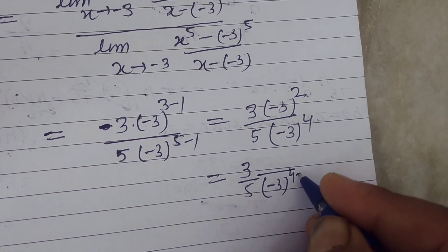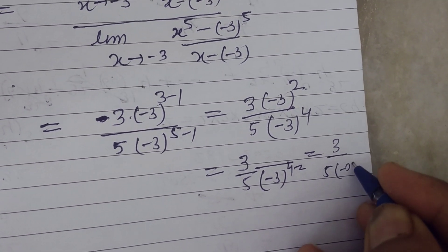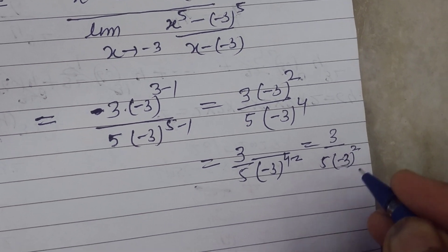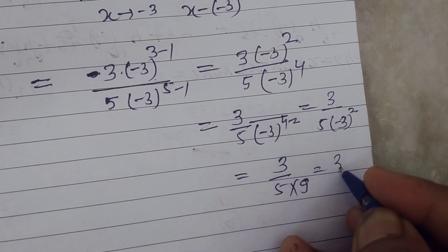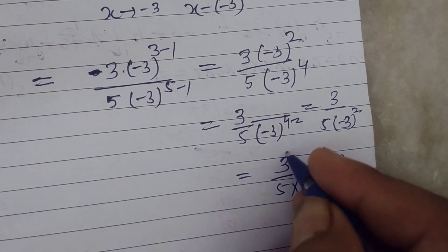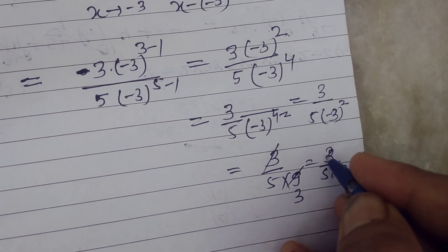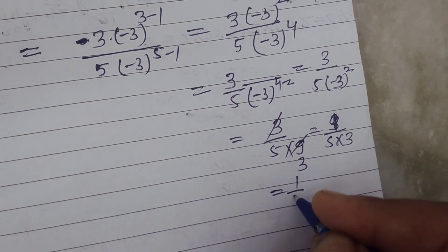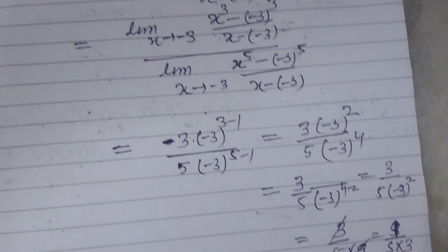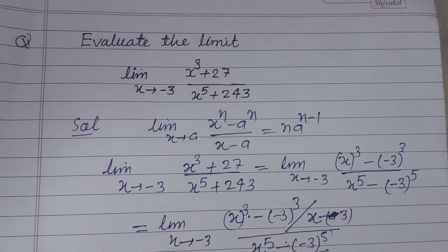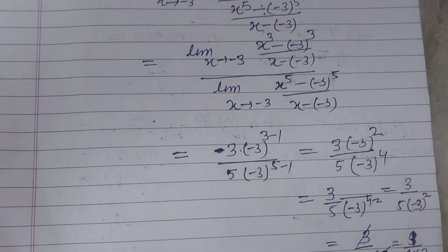Since the powers are positive, this simplifies to 3 upon 5 times (minus 3) to the power 4 minus 2, which is 3 upon 5 times (minus 3) squared, giving 3 upon 5 times 9, that is 3 upon 45, so the answer is 1 upon 15. I hope you understood. Please like the video and subscribe to the channel. Thanks.